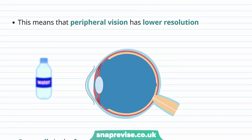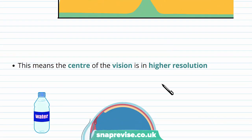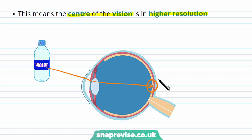Because of this distribution, we have low resolution in peripheral vision — an object off to your side usually looks poorly defined. The cone cells in the fovea are more dense, meaning the centre of vision has the highest resolution. So if you look directly at an object like a water bottle, light hitting the fovea and the centre of the retina produces a much sharper, more focused image.